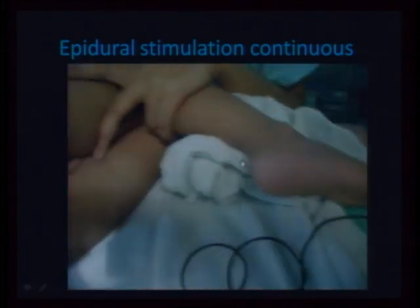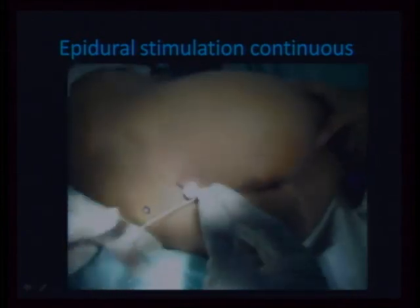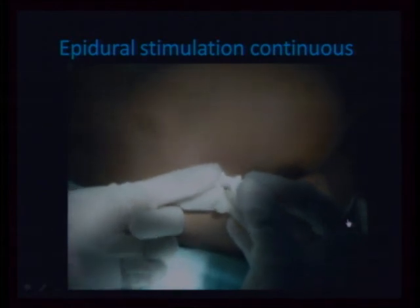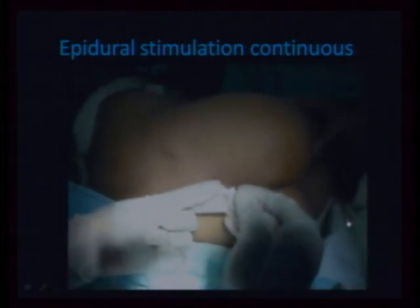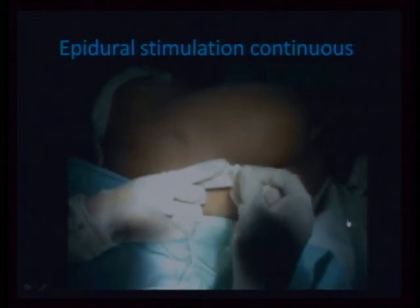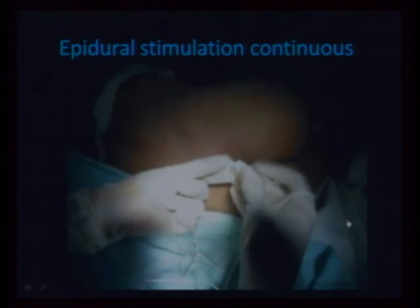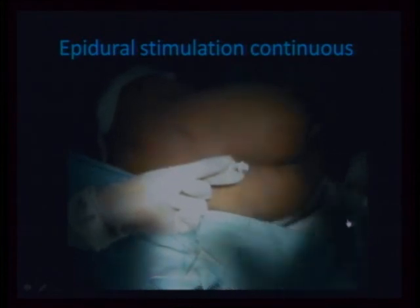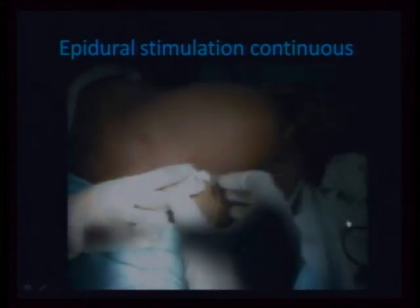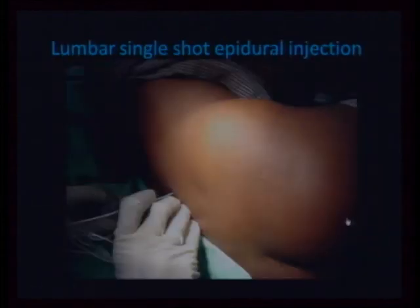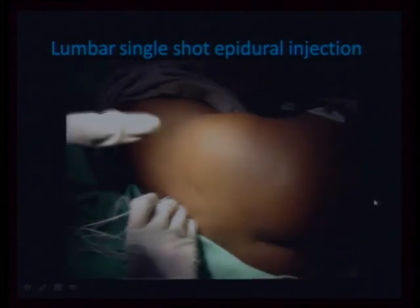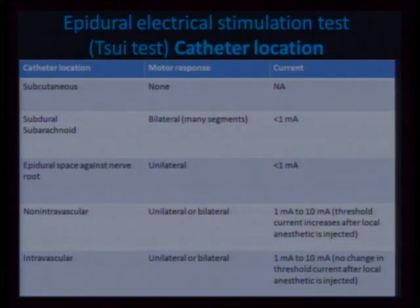This is continuous catheter stimulation. The catheter has been passed and I started getting the twitches that you just saw. Then I expected to see anal twitchings, then dermatomal twitchings. There was an anticlimax here — the battery of the nerve stimulator gave up. So much for evidence-based practice. Let me emphasize this a bit more, then we'll call it a day for this lecture.